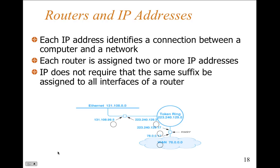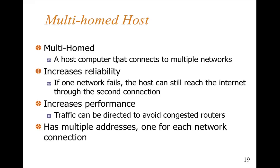Each IP address identifies a connection between a computer and the network. Each router is assigned two or more IP addresses. IP does not require that the same prefix be assigned to all interfaces of the router — you can have different ones. Intelligent routers can do a lot of sophisticated determination. Routers do a lot of number crunching — looking at the data, finding the destination, and figuring out which next router to send the packet to. There's been a lot of experimentation over the years optimizing routing algorithms. Routers do a reliable job; it's speed that could cause a bottleneck with bad hardware.